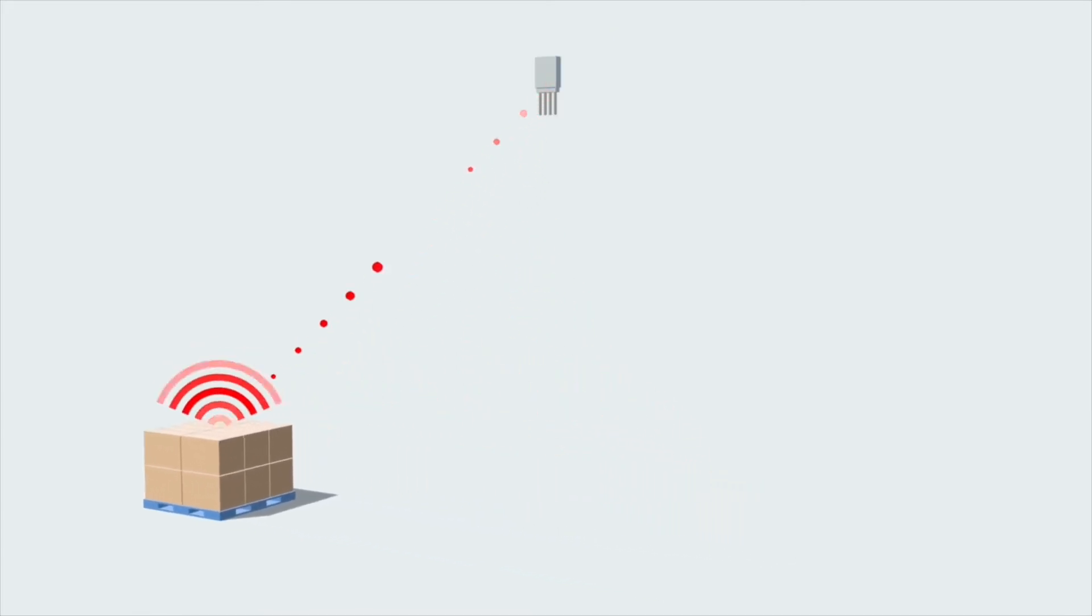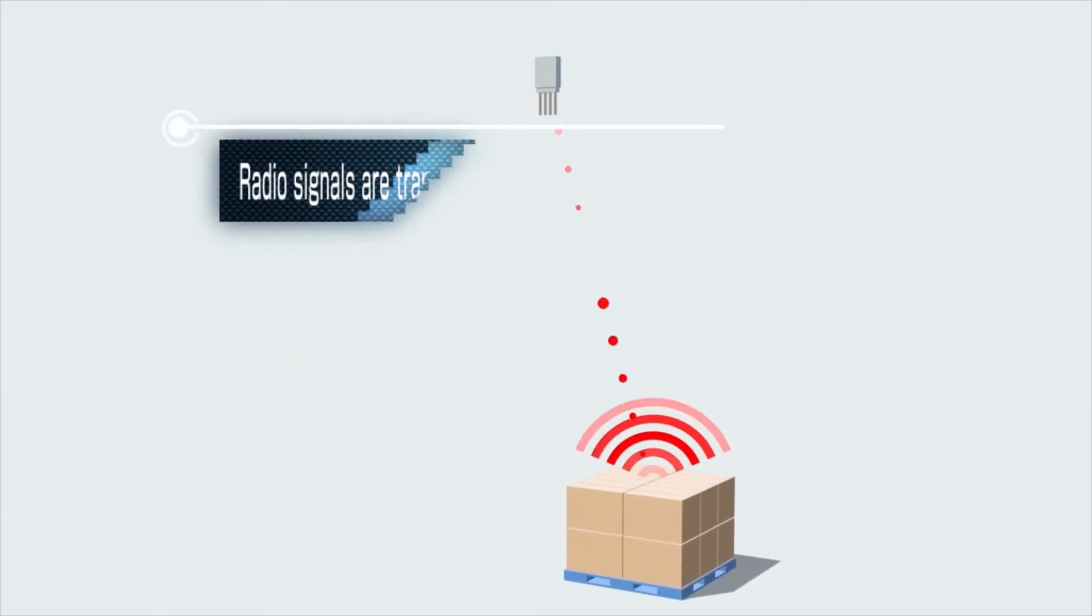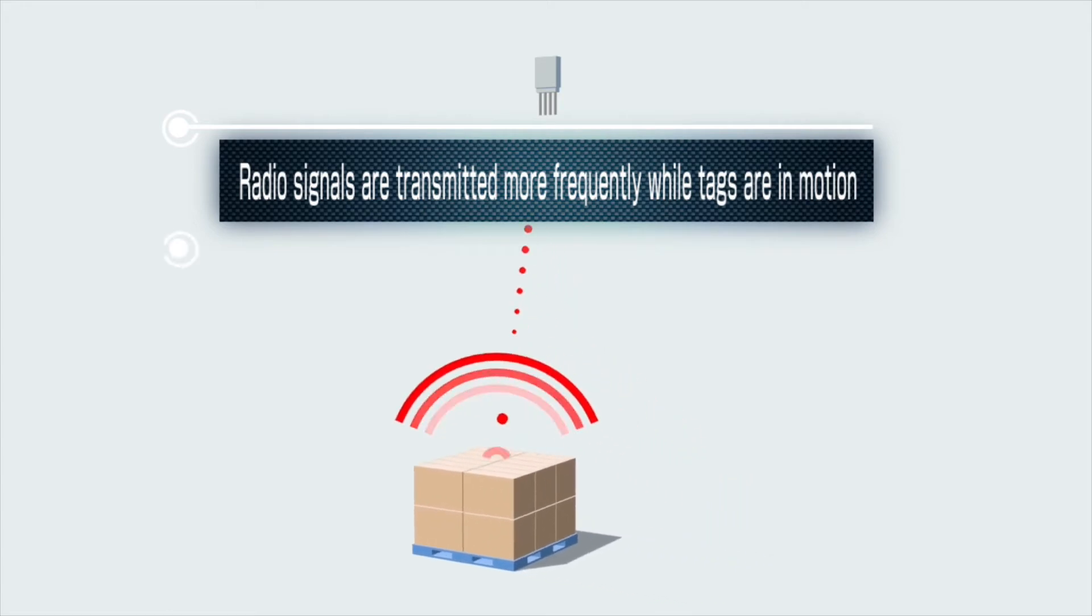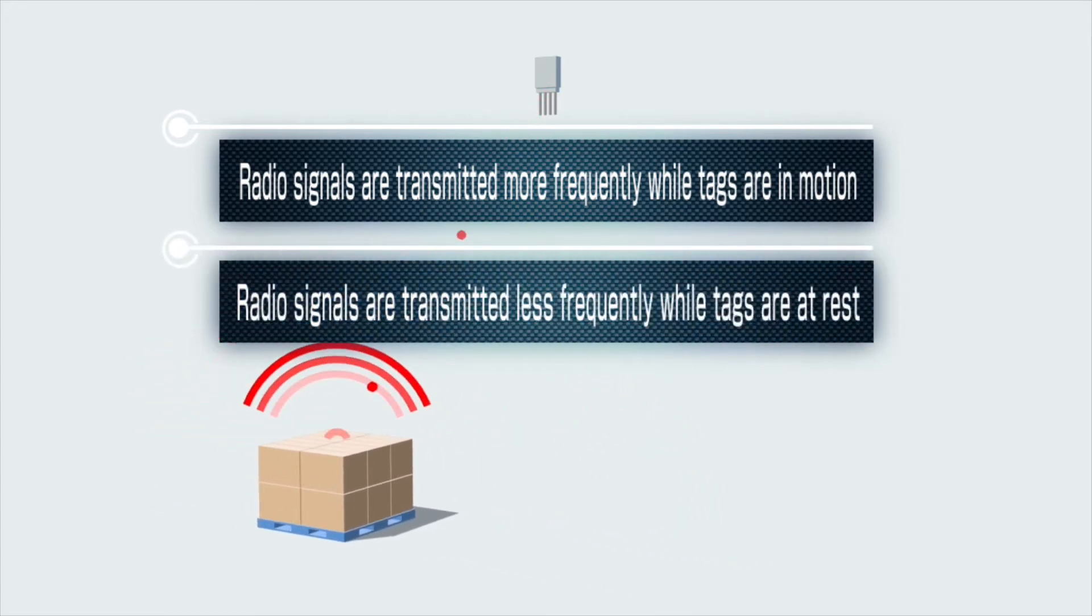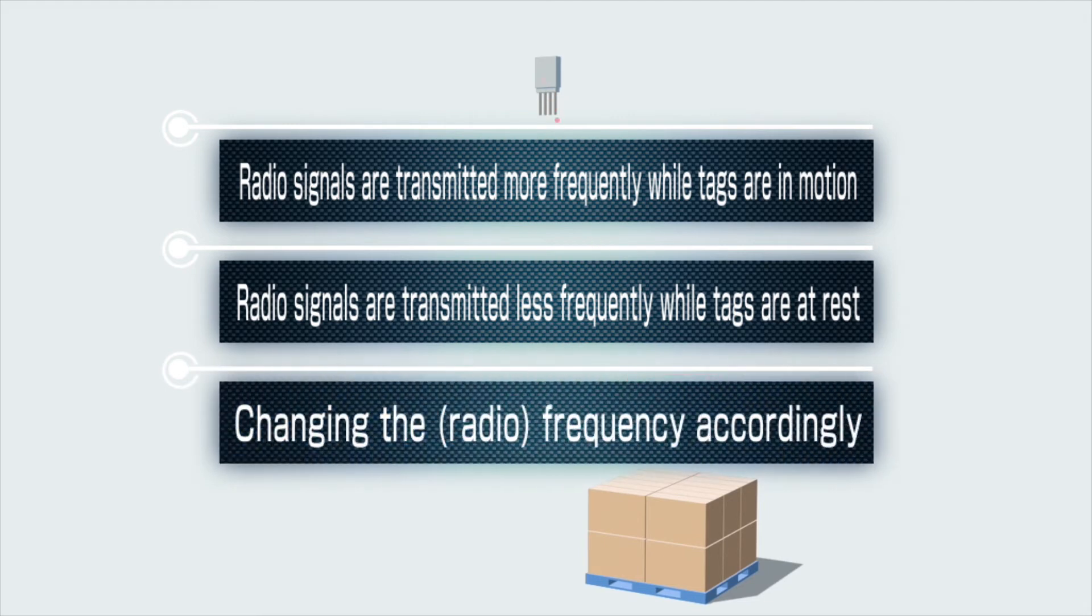Using motion sensors, these active RFID tags transmit signals more often, and even at a different radio frequency when they are moving than when they are at rest. This allows our devised protocol to communicate with dense collections of tags as they move in and out of range, and also to conserve energy for longer battery lives.